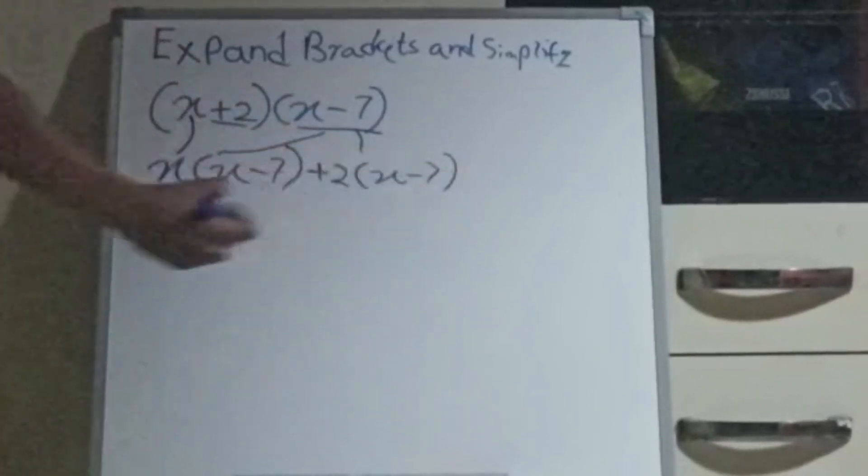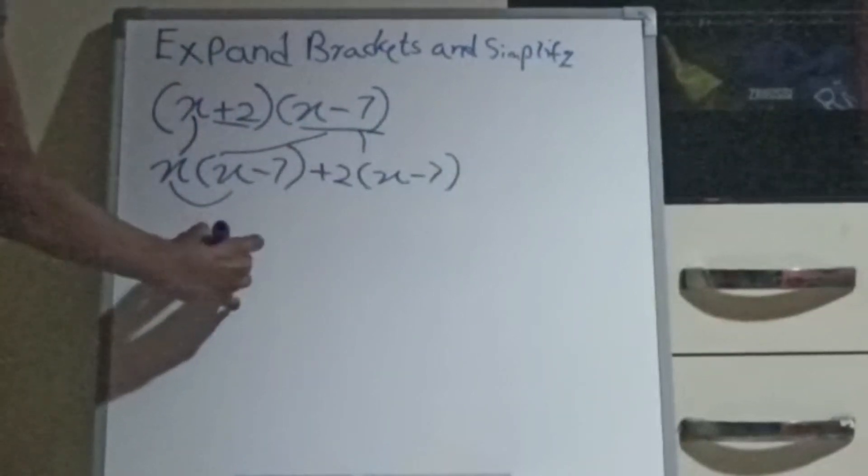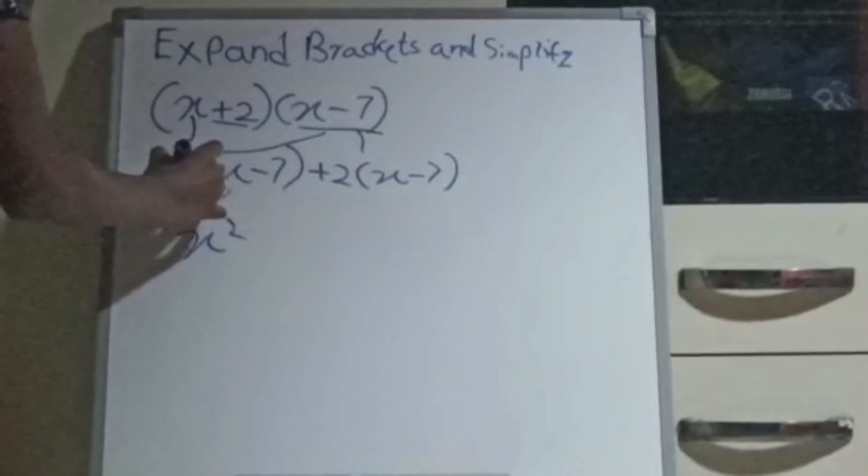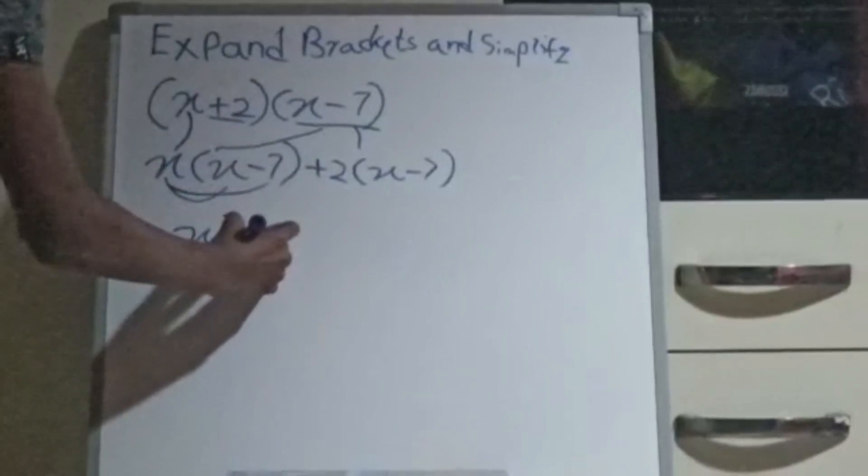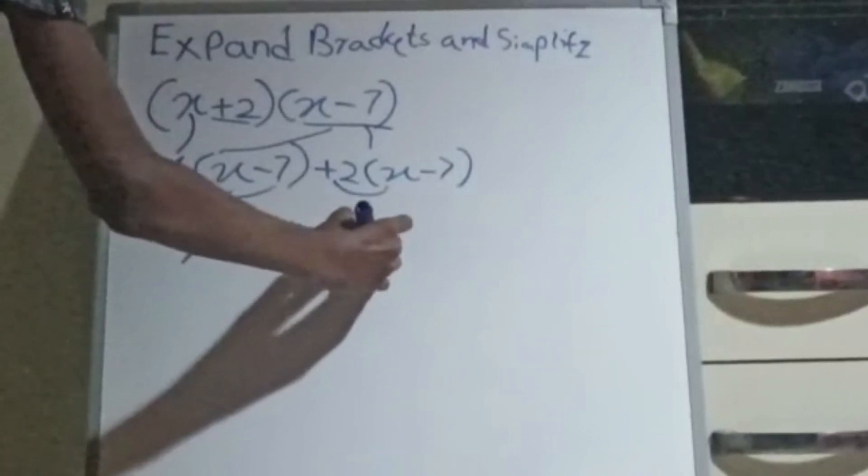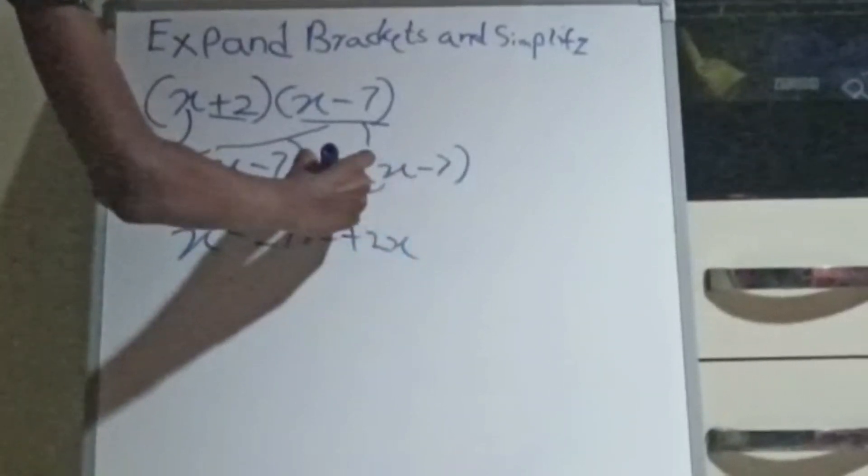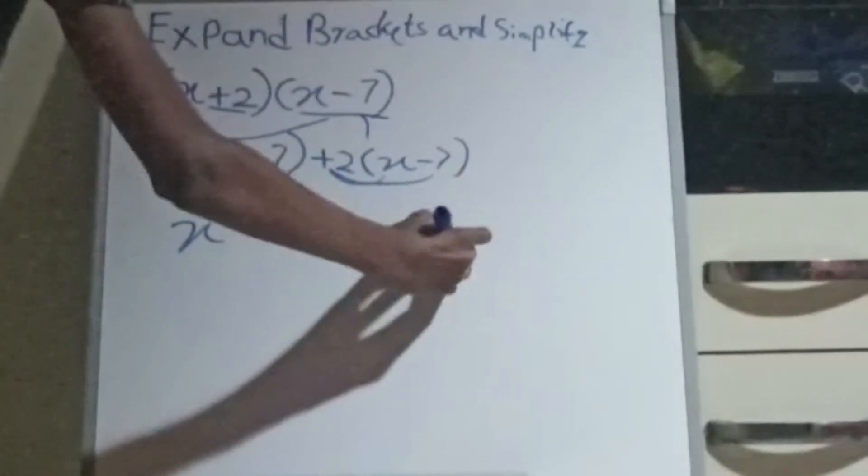Let's simplify this. x times x, x square. x times minus 7, minus 7x. 2 times x plus 2x. 2 times minus 7, minus 14.